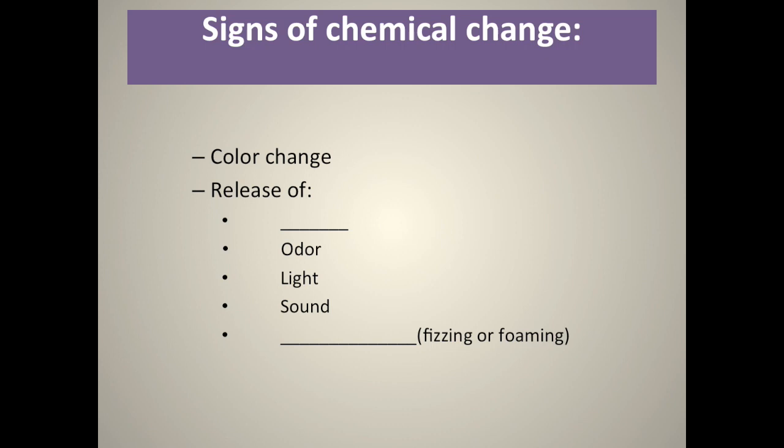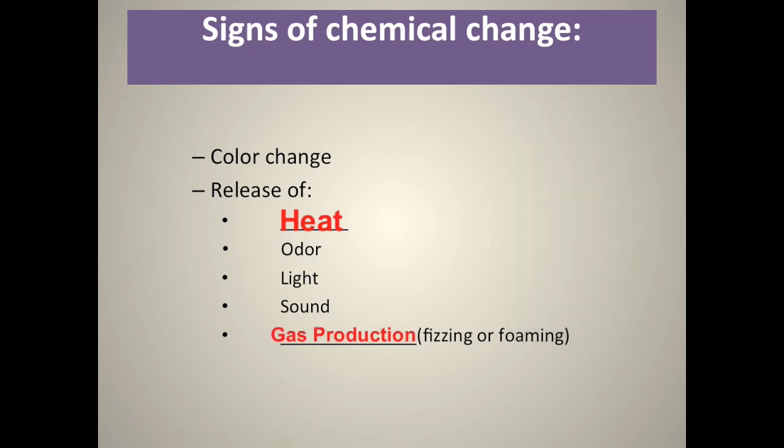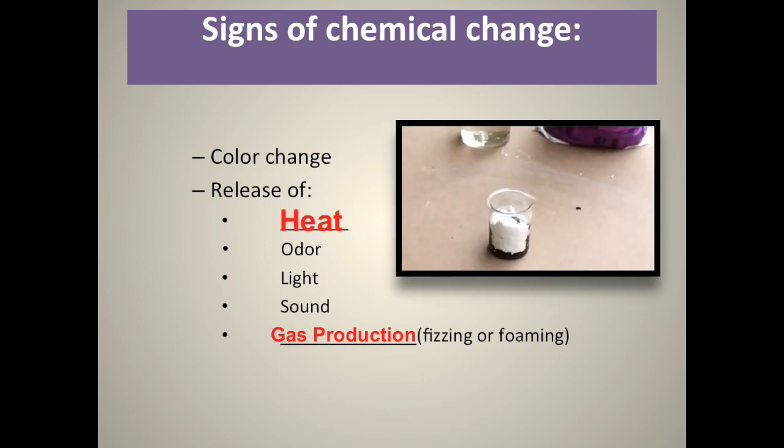How you know you have a chemical change instead of a physical change is you can see if the color of the substance changed, or if heat was given off or absorbed into the compound, if there's a smell given off, if there's light, like with the magnesium ribbon burning, sound produced, or gas, like bubbles fizzing and foaming. All of those are signs of chemical change, and I hope you enjoyed learning about properties of matter.